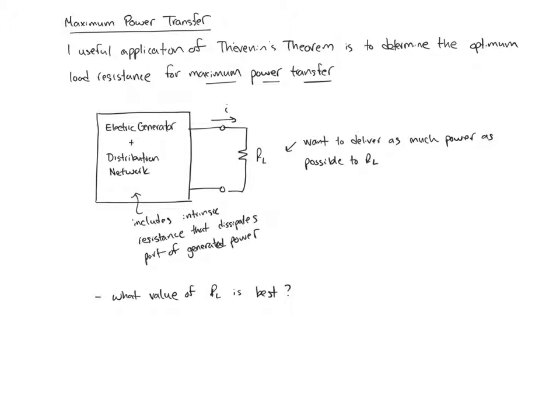Let's assume we have an electric generator with a distribution network to distribute power to consumers. Inside this network there's some intrinsic resistance that dissipates part of the generated power, but we want most of the power to make it to a load. So what value of load resistance RL, if we can model that load as a single resistance, is optimal?